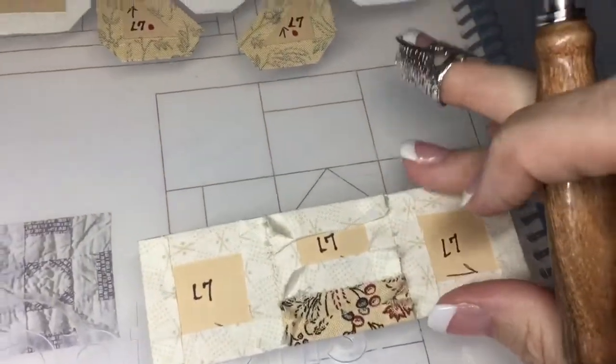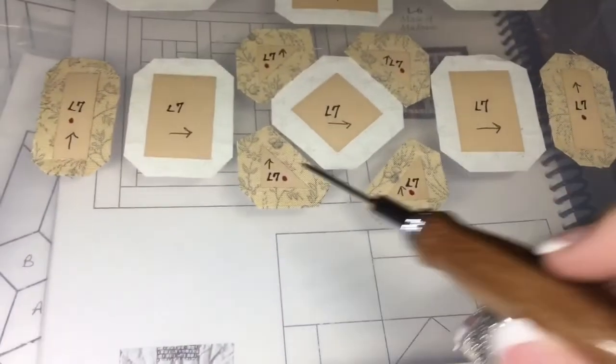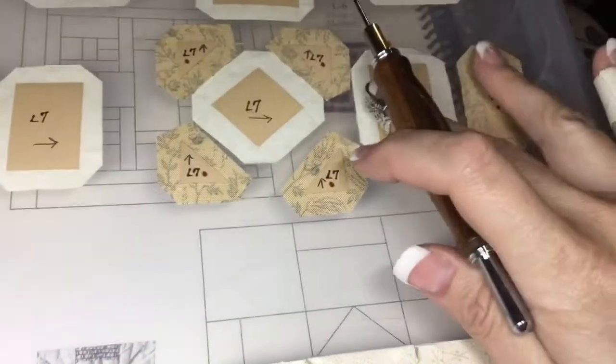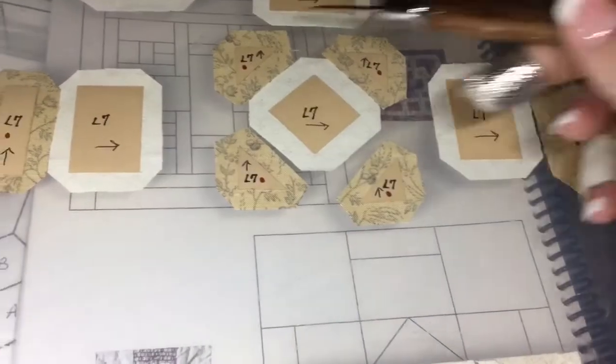I will set that aside and work on the central section. I'm going to put these together in one square, and this is the other square, and then I will work on the center.